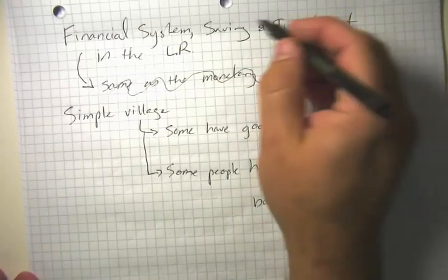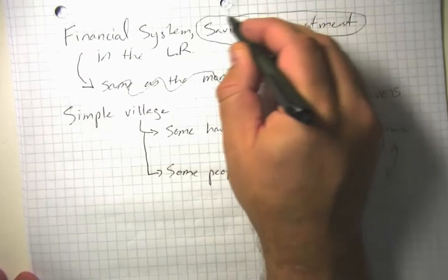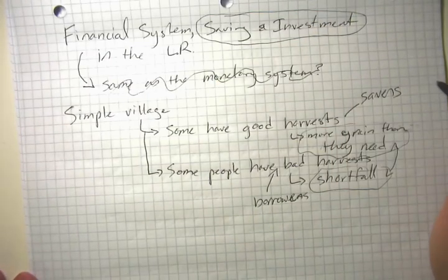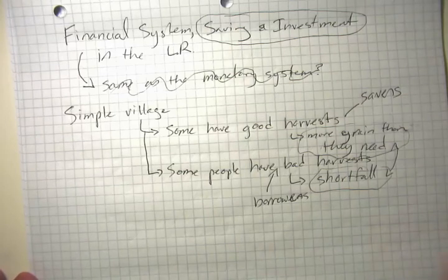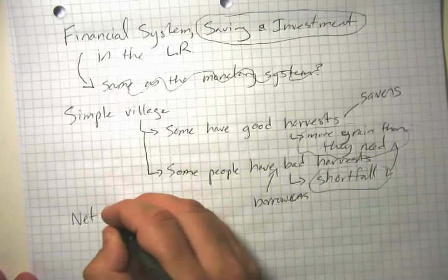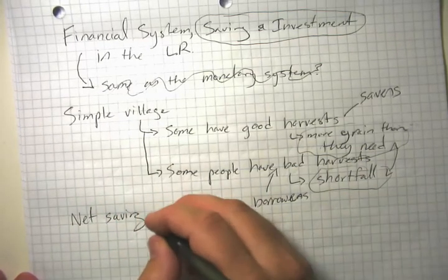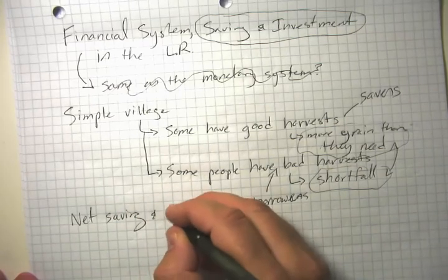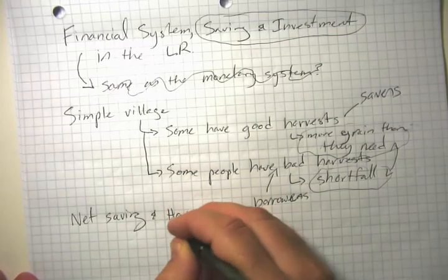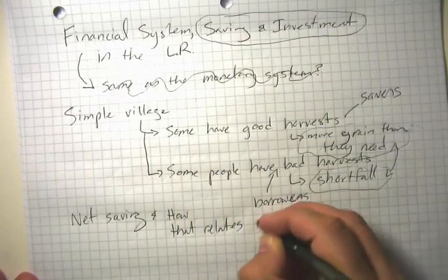Ultimately though, we're interested in saving and investment at the overall societal level, rather than which particular individuals are saving or investing. And so what we're really interested in is the net saving that goes on and how that relates to investment spending.